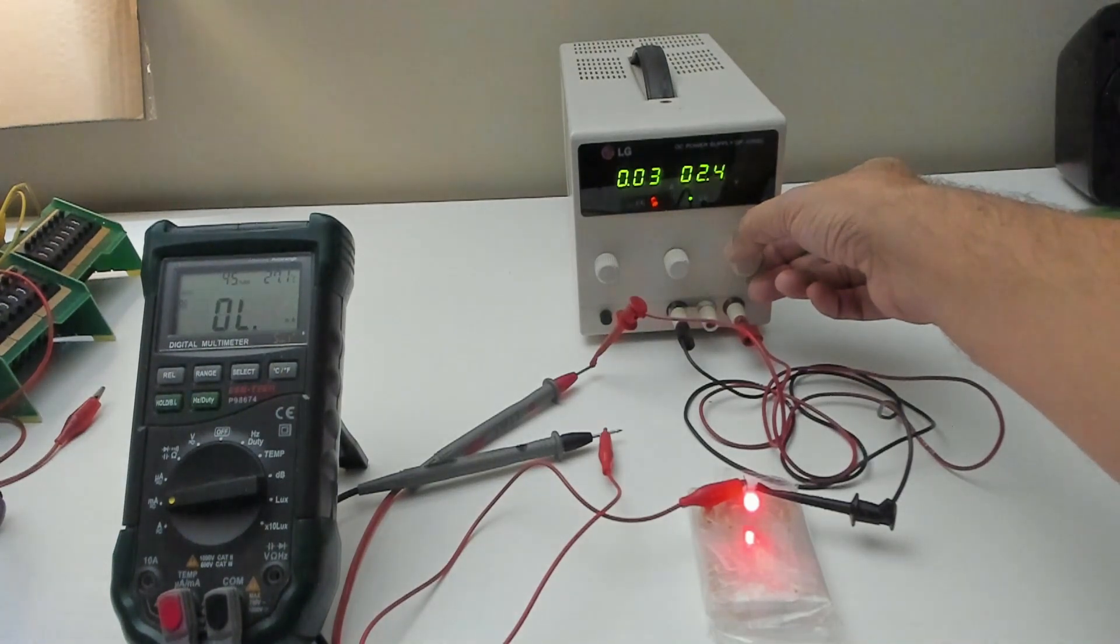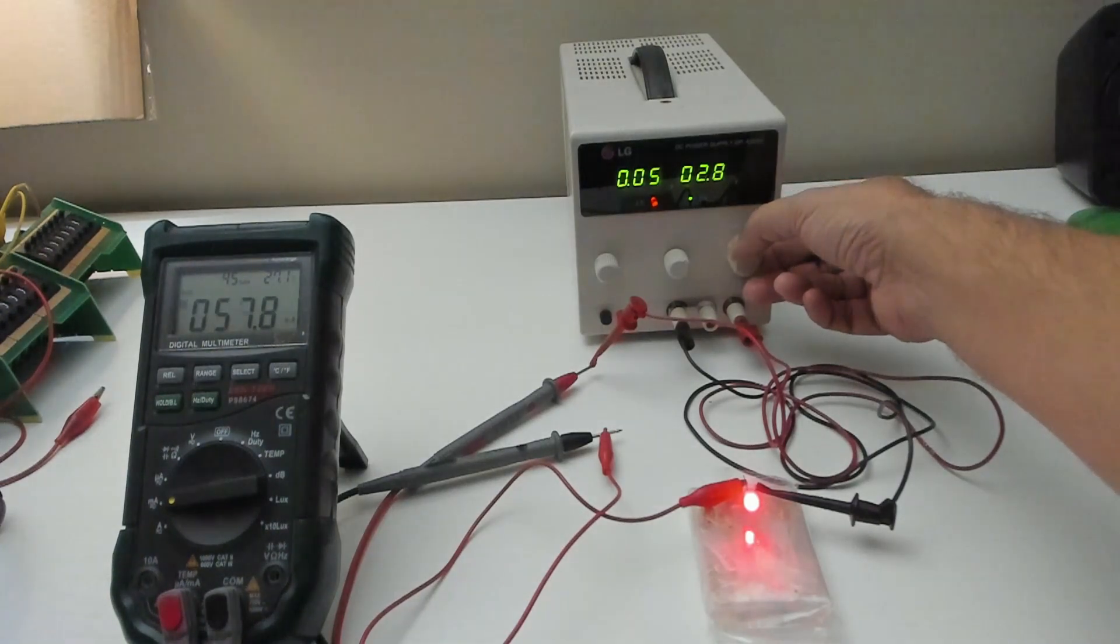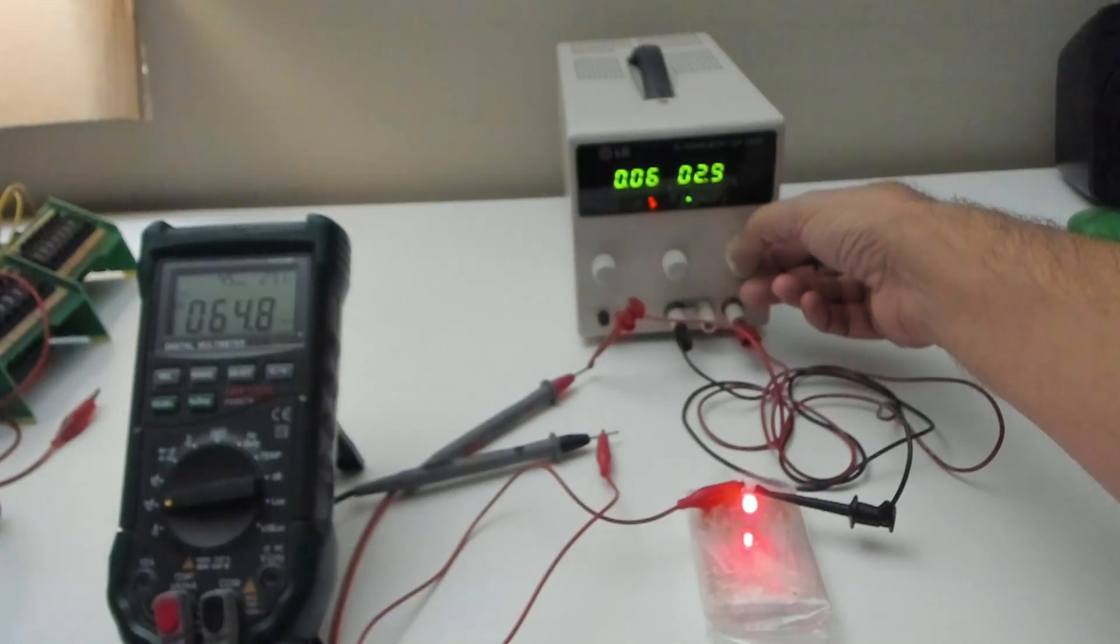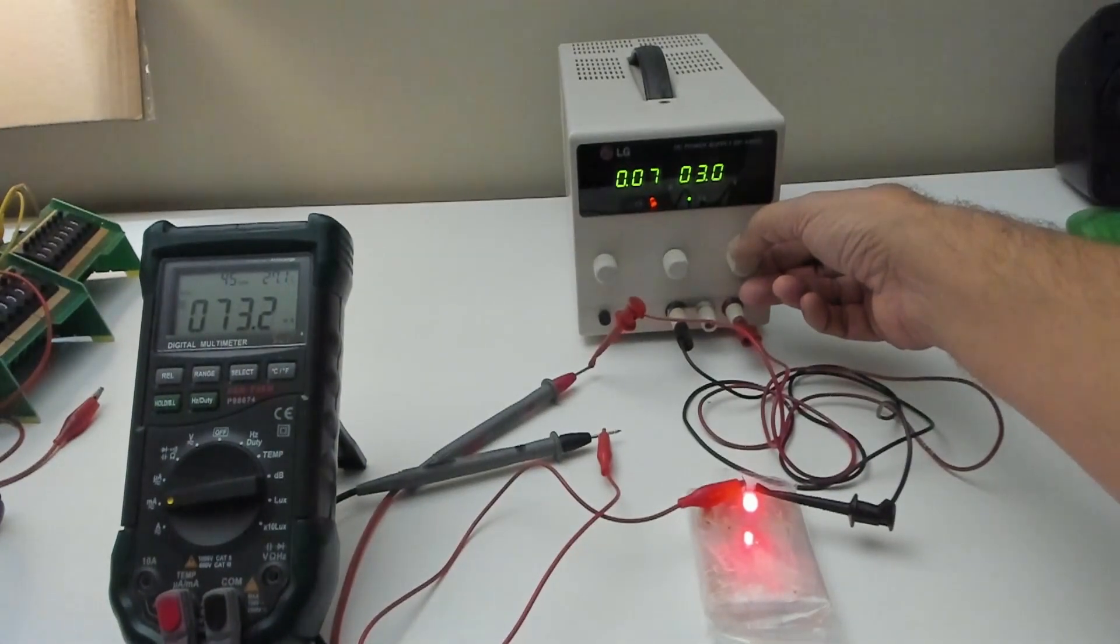2.5 we're at 40. 2.6 we're at 50 already. 2.8 we're at 60, 70 at 3 volts.